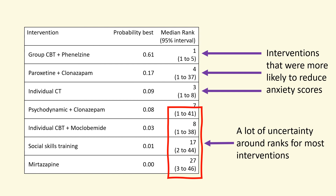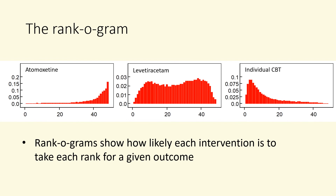Probability best has an intuitive interpretation, but we need to be cautious interpreting this, as it can be misleading when estimates are uncertain with wide intervals. The rankogram is the richest information source because it shows how likely each intervention is to take each rank for a given outcome — it displays the probability that an intervention is best, second best, third best, and so on until the probability it is worst. For example, atomoxetine is likely to be one of the worst of the 48 interventions since it was ranked towards the bottom, while individual CBT was ranked highly. Beware of interventions that have flat distributions like levotiracetam, or a high probability of being ranked both best and worst, as this usually means we don't have a precise estimate of their effect. In this situation, it may be appropriate to consider research recommendations rather than treatment recommendations.